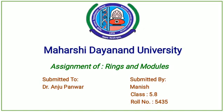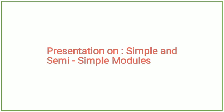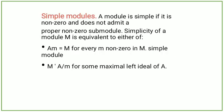Hello everyone, today I will discuss simple and semi-simple modules. A module is simple if it is nonzero and does not admit a proper nonzero submodule. Simplicity of a module M is equivalent to either of: Am equals M for every m nonzero in M (simple module), or M equals A/m for some maximal left ideal of A.